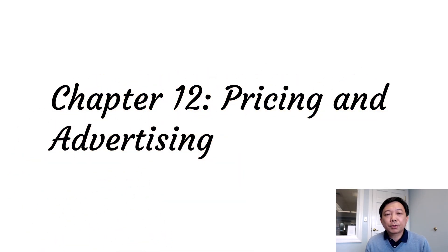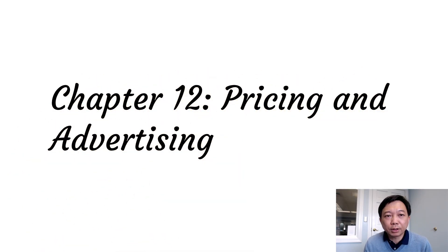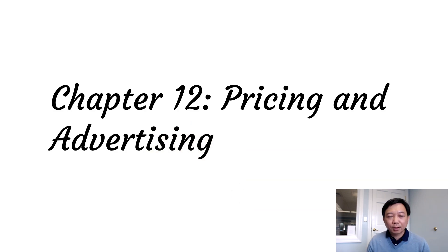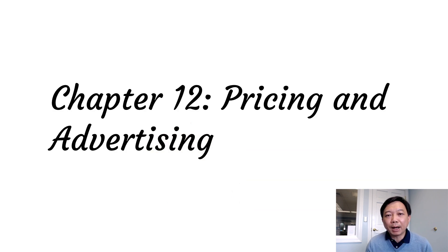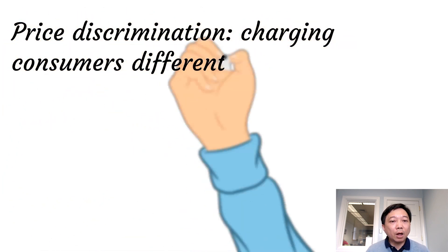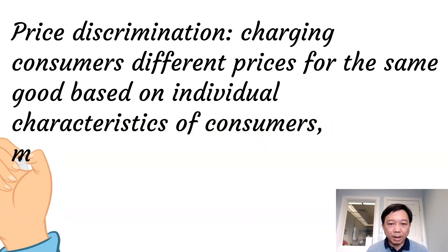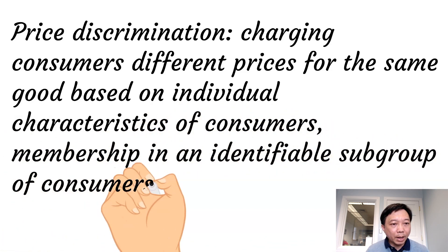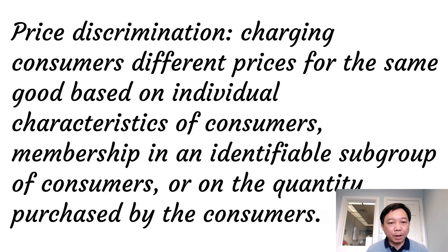Different firms use different pricing strategies. Some firms charge different prices to different groups of customers. Some stores require that customers buy an annual membership to be able to buy goods at relatively low prices. In the last chapter, we learned that a monopoly maximizes its profit when it uses uniform pricing, charging the same price for every unit sold to every customer.